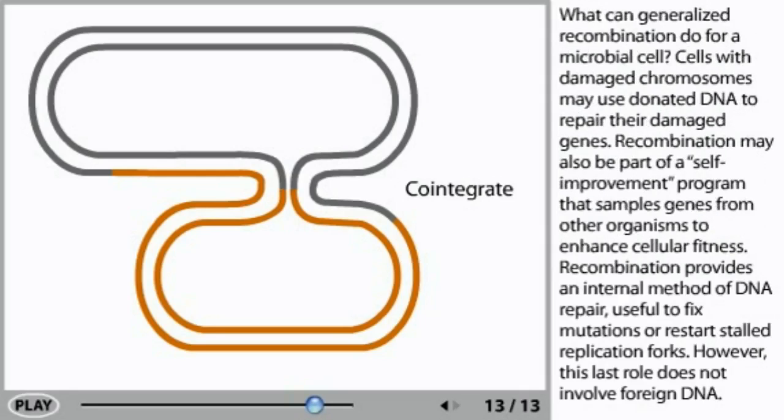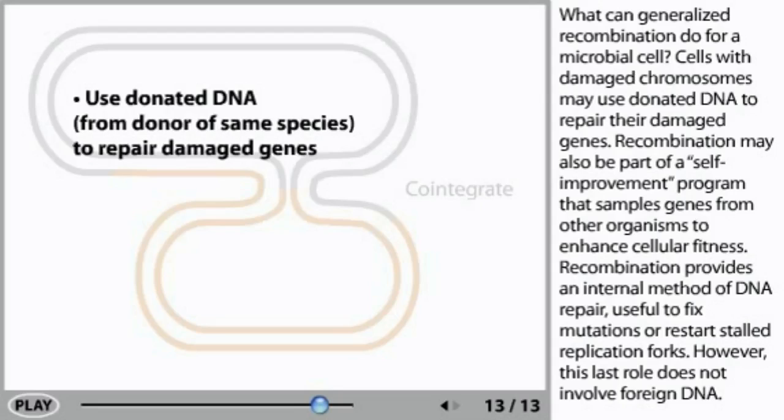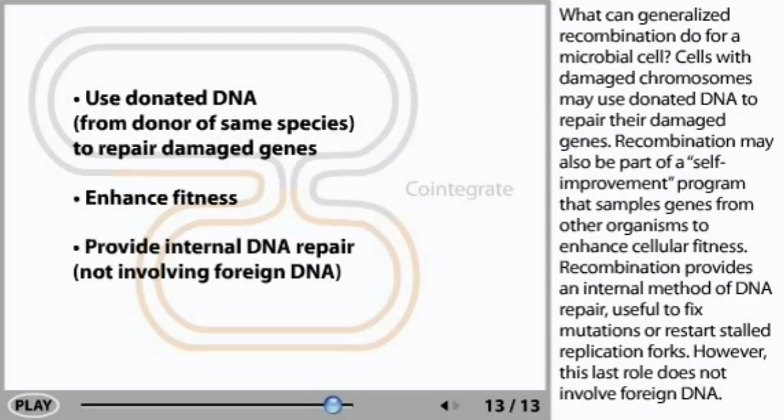What can generalized recombination do for a microbial cell? Cells with damaged chromosomes may use donated DNA to repair their damaged genes. Recombination may also be part of a self-improvement program that samples genes from other organisms to enhance cellular fitness. Recombination also provides an internal method of DNA repair useful to fix mutations or restart stalled replication forks. However, this last role does not involve foreign DNA.